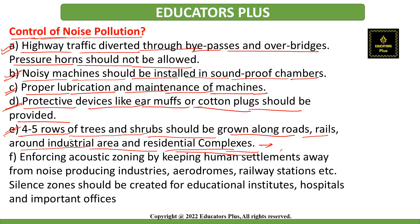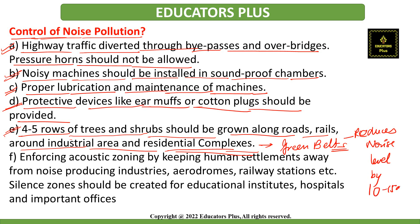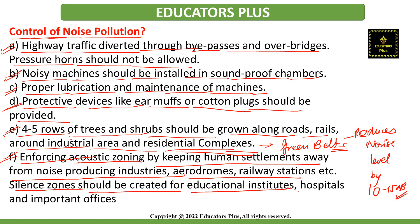Four to five rows of trees and shrubs should be grown along roads, railways, around industrial areas and residential complexes in order to decrease the intensity of sound. These rows of trees are also called green belts, and they reduce noise levels by 10 to 15 decibel. Trees can actually help reduce noise pollution by absorbing sound. Additionally, enforcing acoustic zoning by keeping human settlements away from noise-producing industries and railway stations is important. Silence zones should also be created for educational institutes, hospitals and important offices.